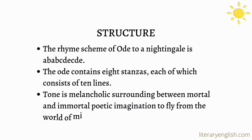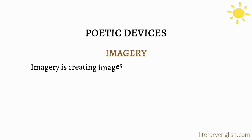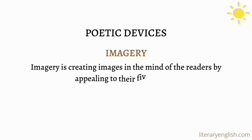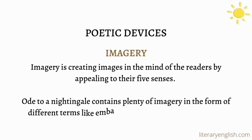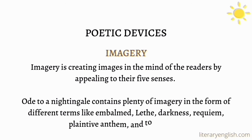Now let's talk about the poetic devices that are used in the poem. The first poetic device is imagery. Imagery is creating images in the mind of the readers by appealing to their five senses. 'Ode to a Nightingale' contains plenty of images in the form of different terms like embalmed, bleat, darkness, requiem, clam to Lethe, and tolling bell.